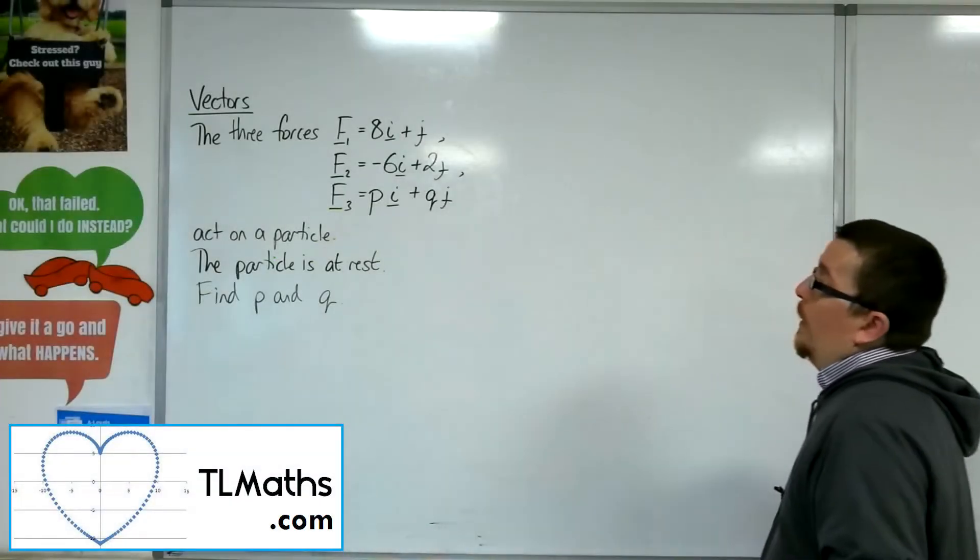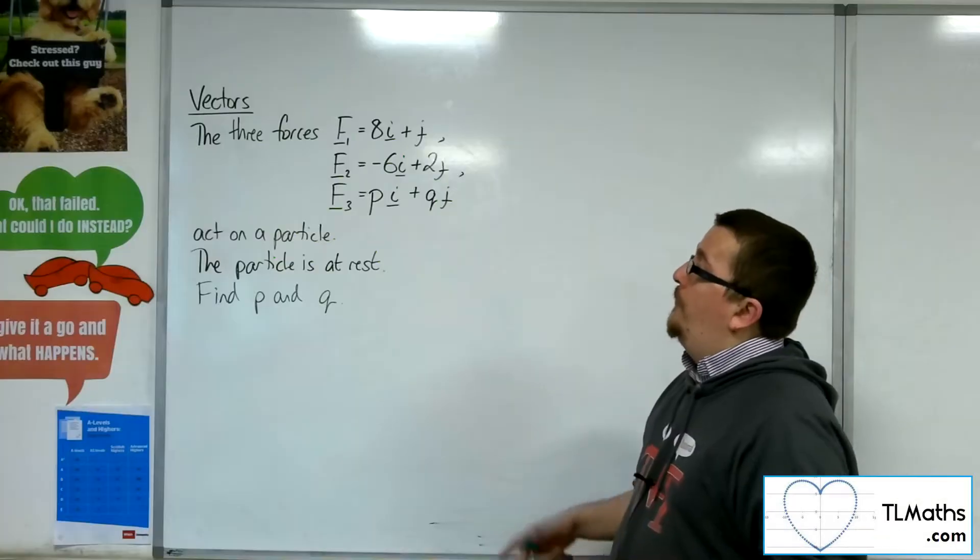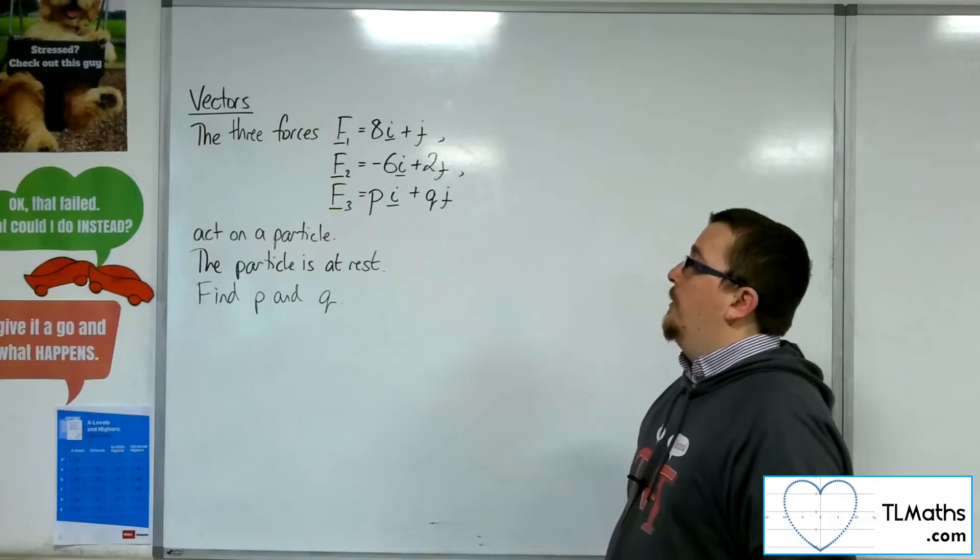Okay, so let's say we have these three forces: F1, which is 8i plus j, F2, which is minus 6i plus 2j, and F3, which is pi plus qj.